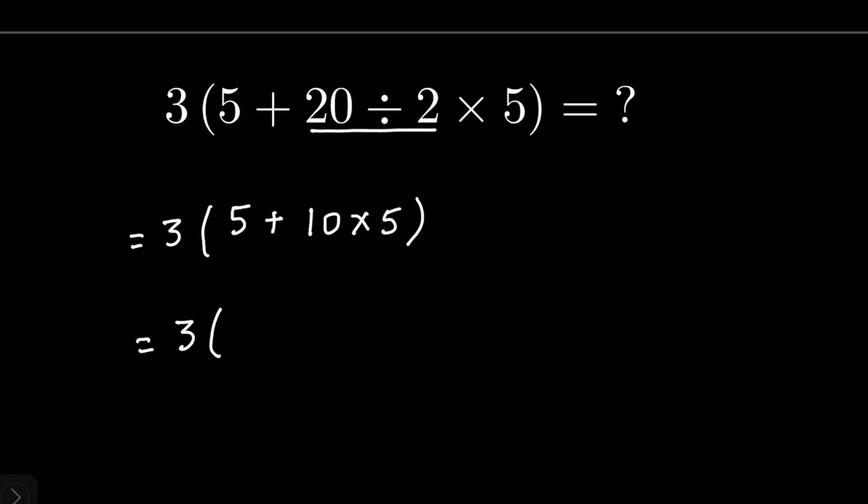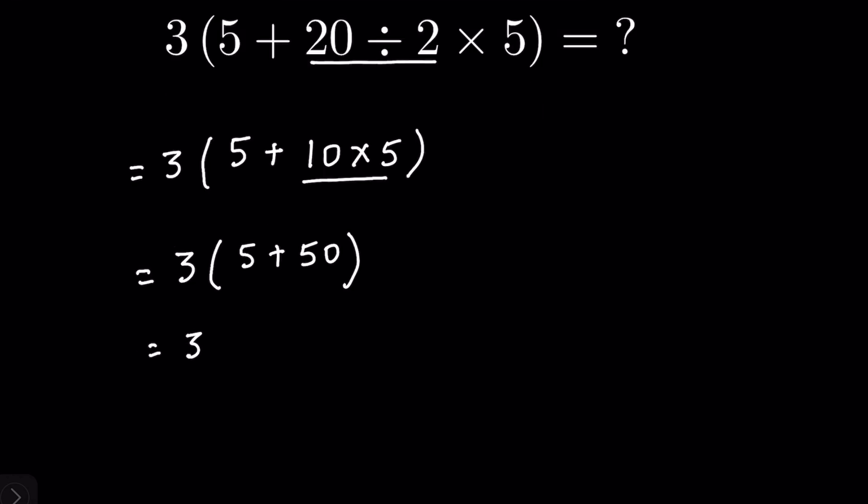Then next step is to solve the multiplication: 5 plus 50. Now you add it, 55, and remove the bracket. When there is no sign here, a multiplication sign is hidden here, so we write it 3 multiplied by 55.